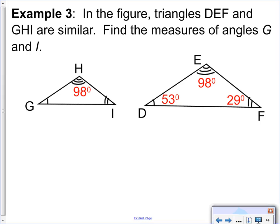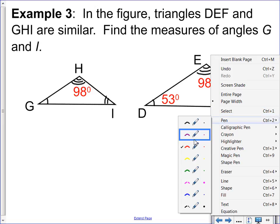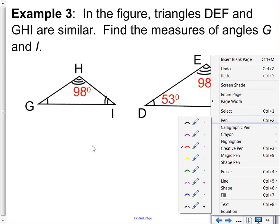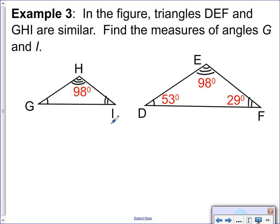So for the next example, the parts that are similar will help you find the measures of the missing parts of the angle. It should be pretty easy. Based on that first thing, what angle corresponds to angle G? Therefore, angle G has to have a measure of 53 degrees. And angle I corresponds to F, so it has to have a measure of 29 degrees. Hopefully, if this adds up, it should be 180.